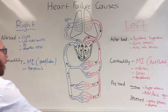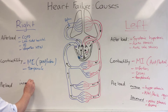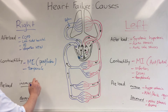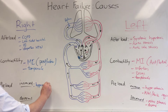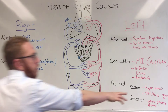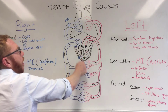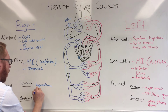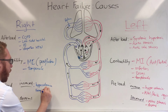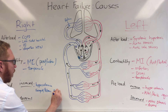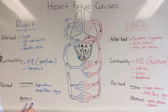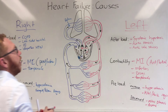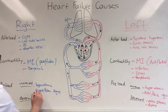On the right side, the same preload categories apply — increased or decreased. Increased preload again includes hypervolemia. For valvular causes, instead of mitral we have the tricuspid, and instead of aortic we have the pulmonary valve — so tricuspid and pulmonary valve regurgitation. Additionally, a congenital septal defect causing left-to-right shunting across the septum would also increase right-sided preload.